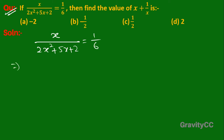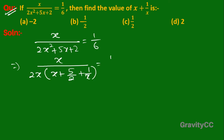We take 2x as a common factor from the denominator, so we get x upon 2x(x + 5/2 + 1/x) equal to 1 upon 6. Here x cancels and 6 is divided by 2, and after cross multiplication we get the simplified expression.